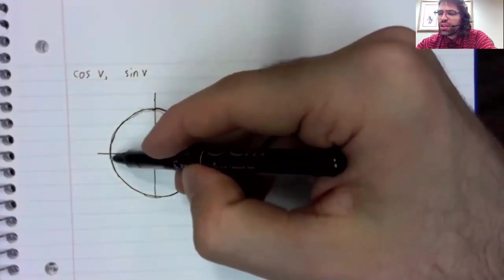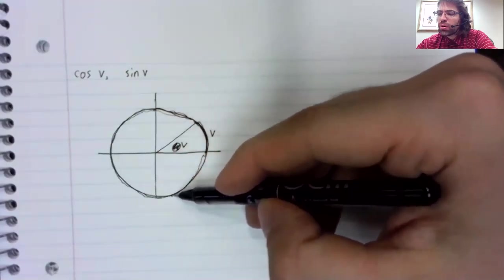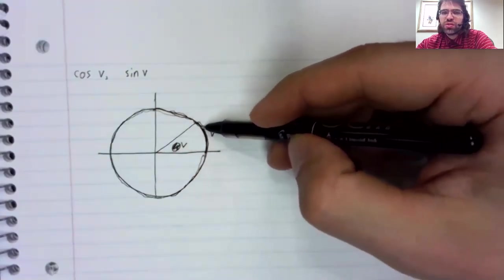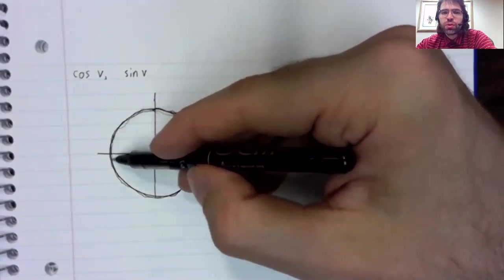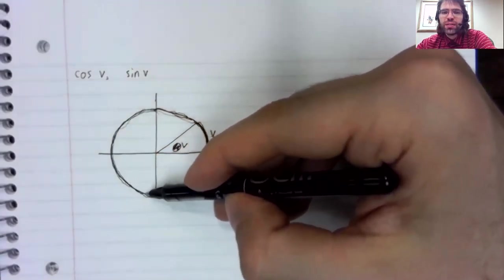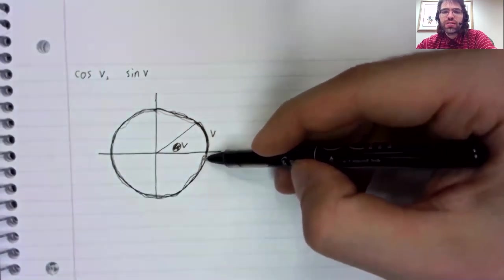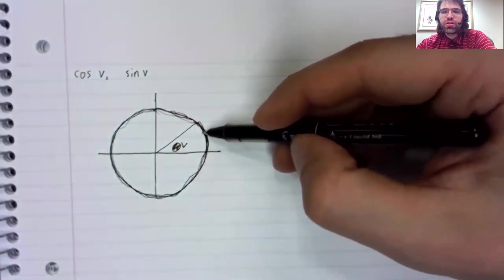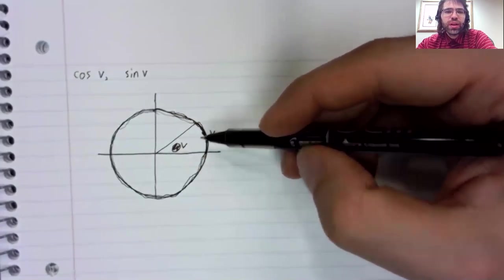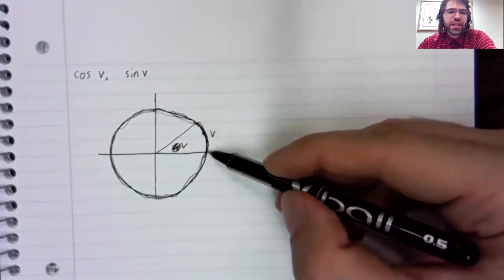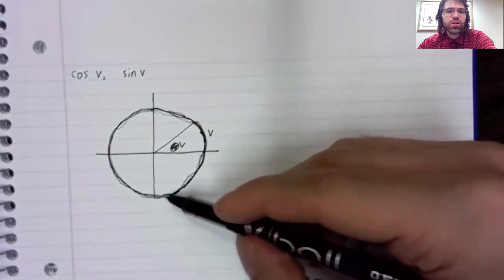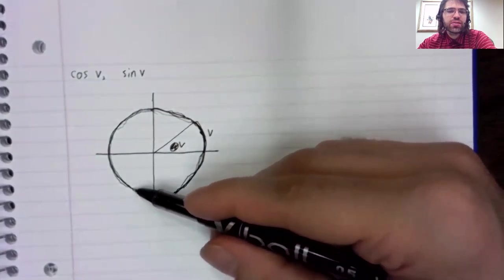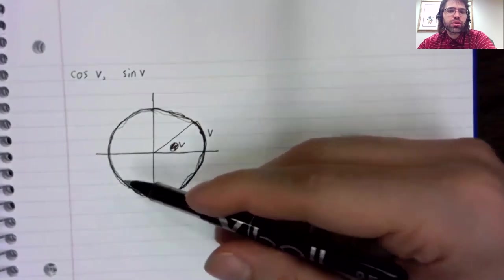V can be a large number or a small number. However large or small it is, we can walk that distance around the unit circle. If v is negative, that just tells us we're walking clockwise instead of counterclockwise.